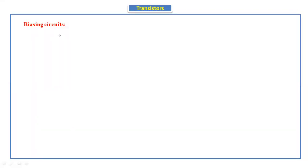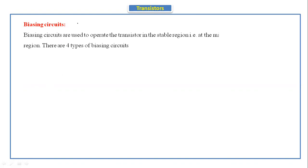Hello everyone, today we are going to discuss about the biasing circuits. In the previous classes we have discussed about the fixed bias and the emitter feedback bias. In today's class we will discuss about the collector to emitter feedback bias. Before going to that, first we'll see what is biasing circuits. Biasing circuits are used to operate the transistor in the middle of the active region, which is the stable region, as seen on the DC load line.